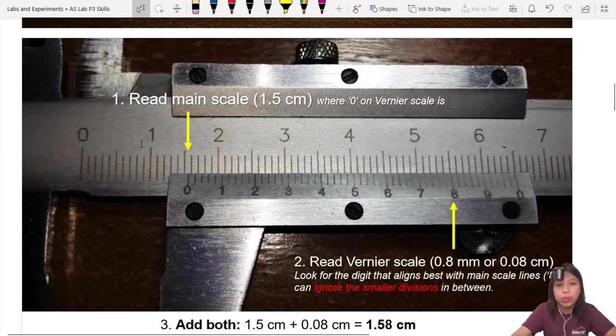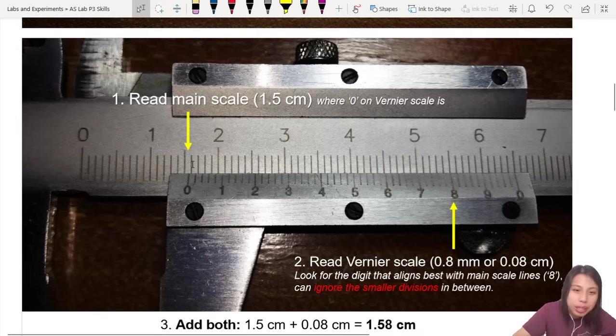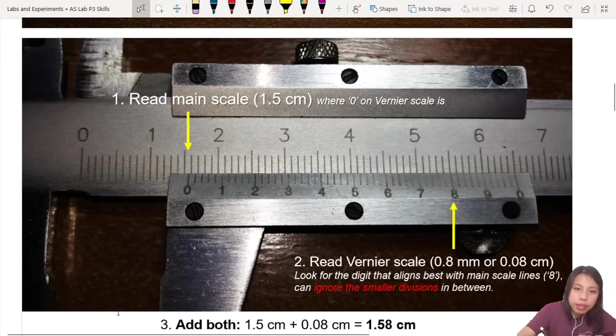First step, you want to read your main scale. Okay? So you see where the 0 is pointing at. Let's say this is 1.5 something. It could be 1.6, could be 1.5, it's somewhere in between. Okay? We don't know. So that's step one. This thing, somewhere here.